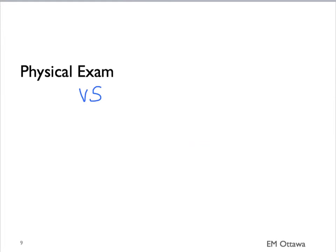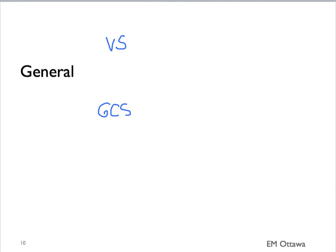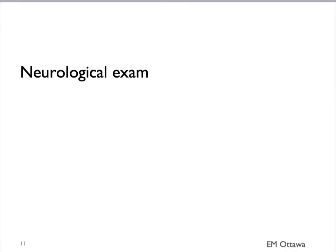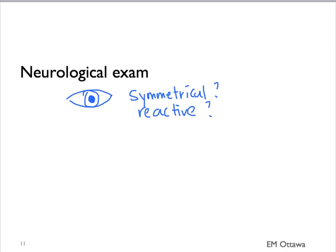On physical examination, we will look at the vital signs, the Glasgow Coma Scale, and focus on the neurological exam. For vital signs, we will look at all parameters including temperature, blood pressure, heart rate, respiratory rate, and O2 saturation. A full neurological examination should be done. We would check the pupils for reactivity and symmetry, and perform a fundoscopy exam to look for papilledema.